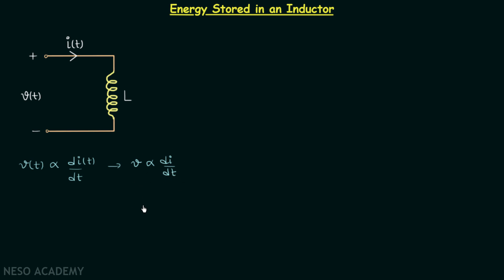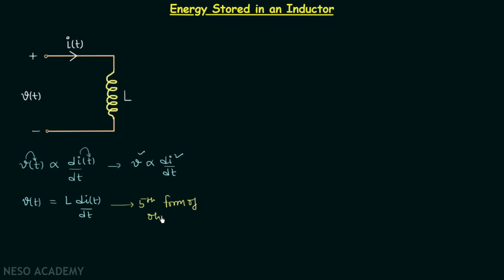In this case we are not representing that V and I are functions of time t — it is self-understood. But when we do write them explicitly as functions of time, and remove the proportionality sign, we have V(t) = L·di(t)/dt. This form we call the fifth form of Ohm's law, and we have derived the other four forms in earlier lectures. The first form is J = σE.